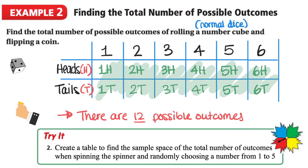Here's our second try question for this video. We want to create a table to find the sample space of the total number of outcomes when spinning the spinner and randomly choosing a number from one to five.